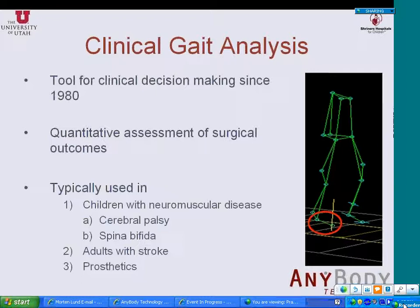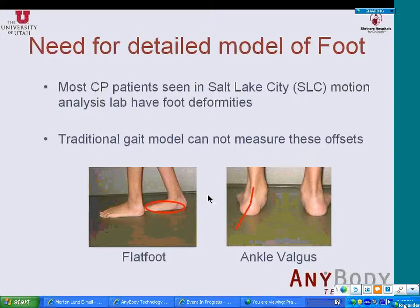What I want you to focus on is that the motion of the feet is measured by two markers only. The whole foot is assumed to be a single segment, as if it is moving together. The only motion these two markers can measure is the ankle flexion of the ankle joint. This ignores the motion happening within the foot — that is, in the intrinsic joints of the feet. Most of the patients we see are pediatric patients affected by cerebral palsy, and most of them have significant foot deformities. For example, on the left you see the medial arch of the forefoot is absent — this is flat feet. On the right, you see excessive valgus of the ankle. These deformities cannot be measured by the current gait analysis model which only puts two markers on the whole foot.